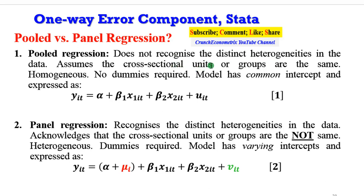It assumes that the units or groups are the same, that is they are homogeneous. Therefore, no dummy variable is included during estimation. The model produces a common intercept as shown in equation 1.